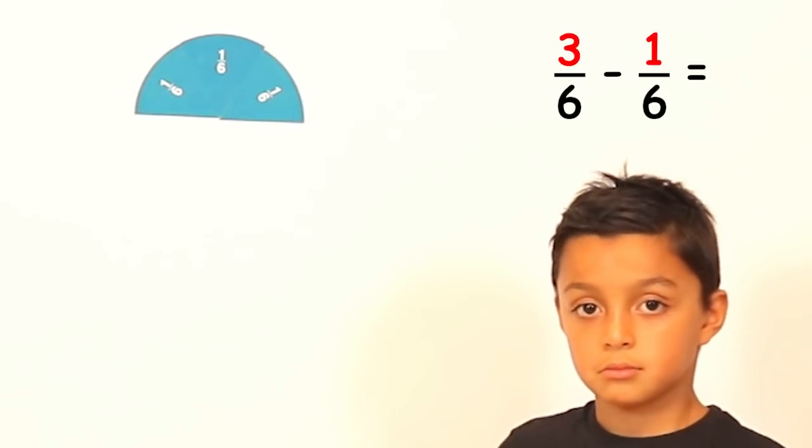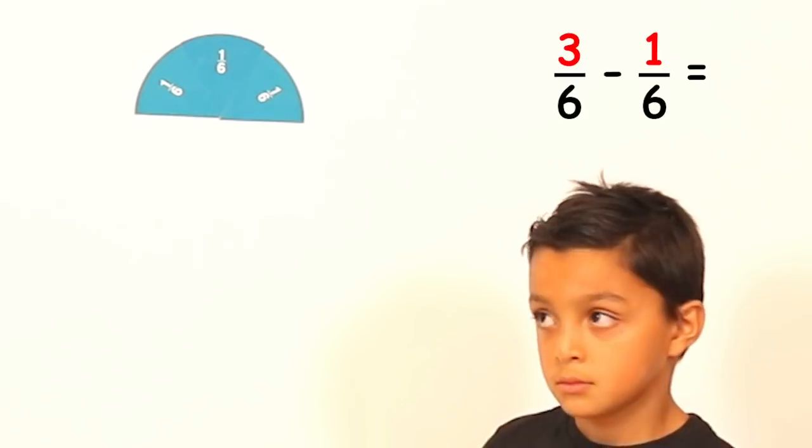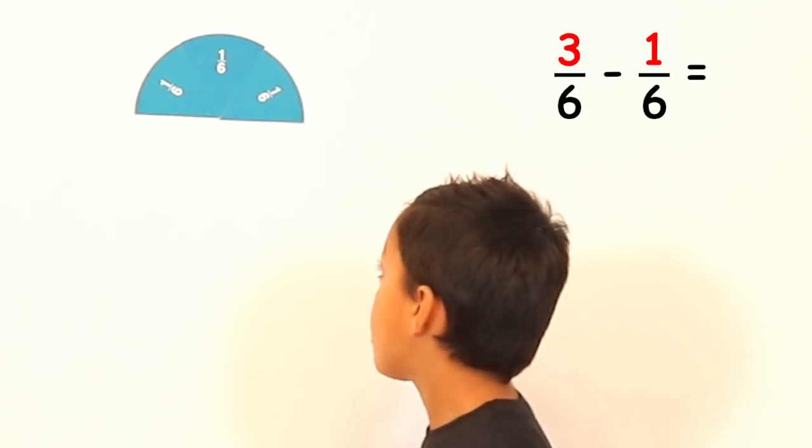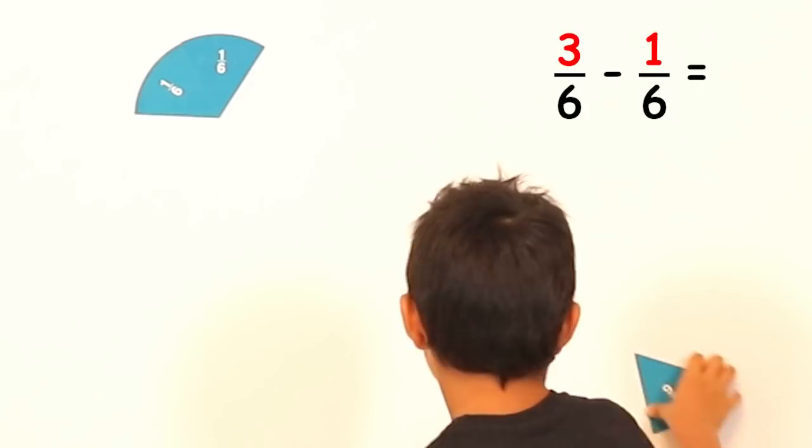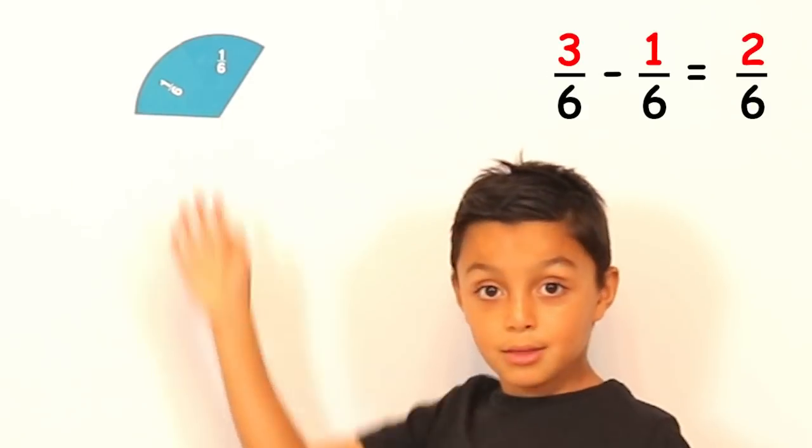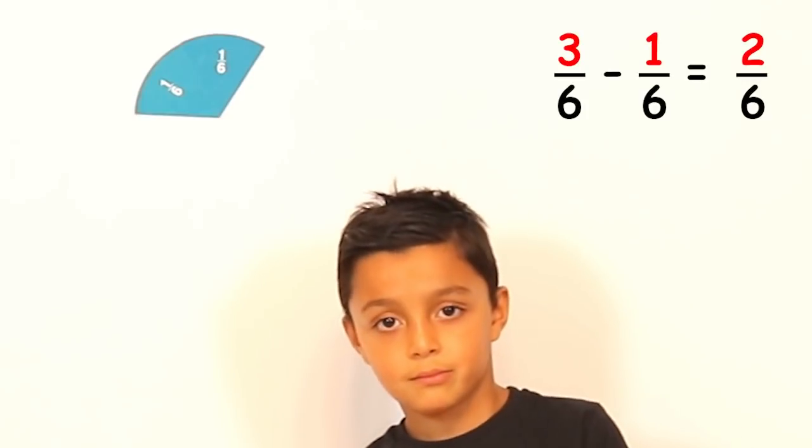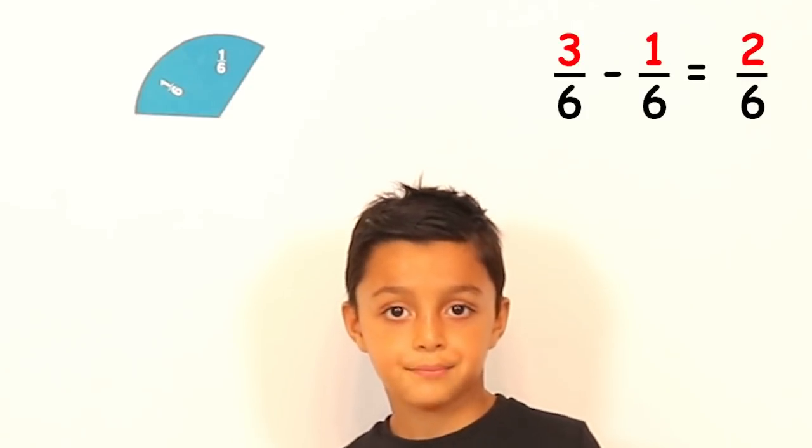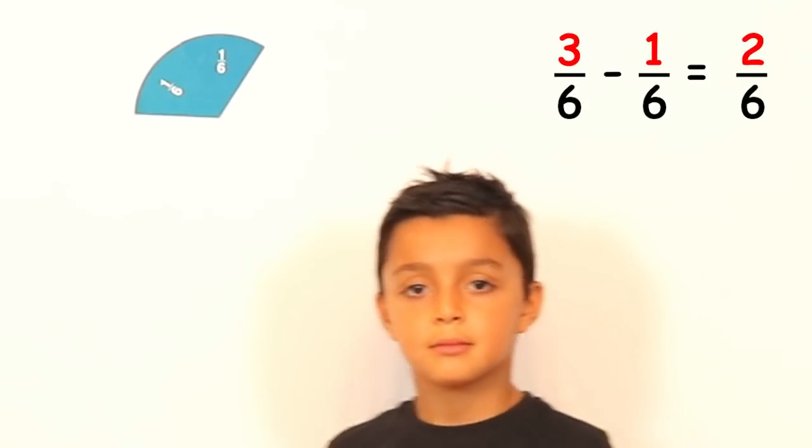Very good. So what is three sixths take away one sixth? Two sixths. Two sixths. So we can take away the numbers as well. So three take away one equals two. That gives us two sixths. Very good.